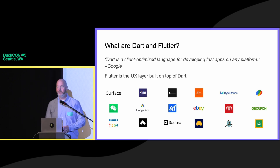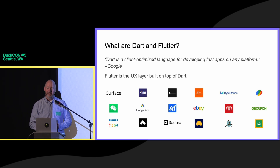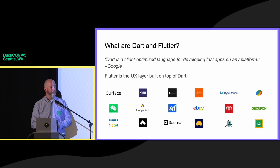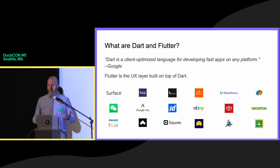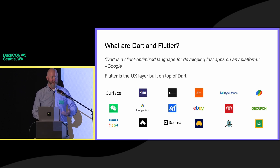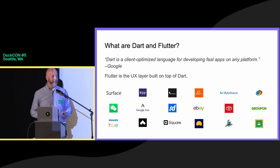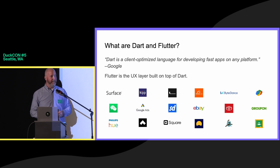Some background on Dart, if you're not familiar: it's a Google language that came out in 2013, part of a cohort of languages that came out around that time — you'll recognize Kotlin, Rust, and Swift. People were hungry for a more modern development stack. Dart itself is a natively compiled, statically typed, null safe, object-oriented, and garbage collected language. But once you layer on Flutter, which is the UX framework and rendering engine built on top of Dart, you get something phenomenal — applications that run everywhere.